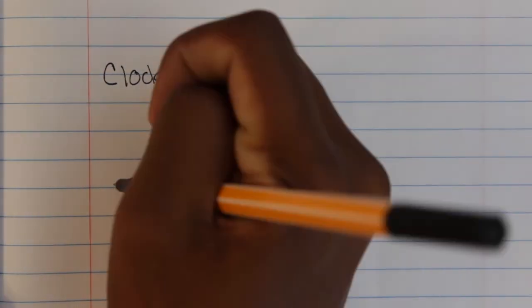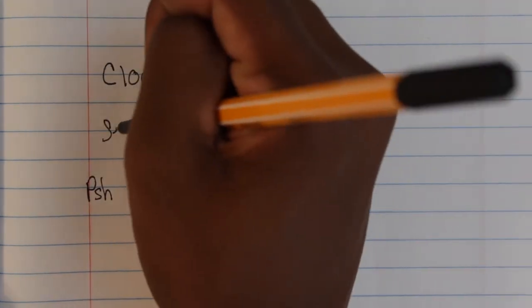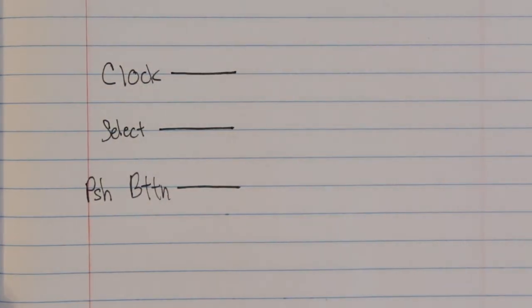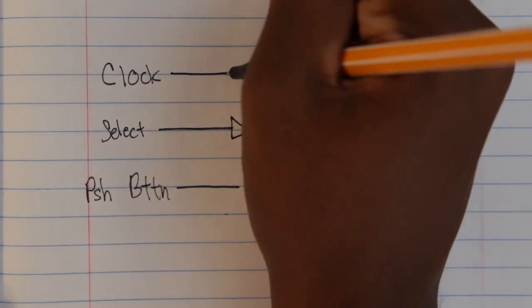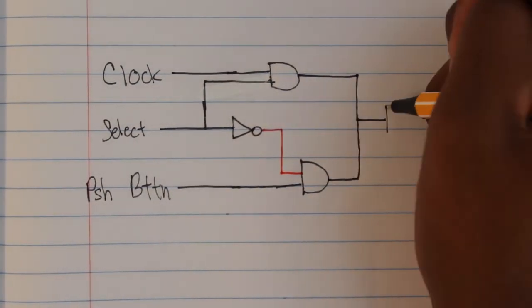So we want it to be able to halt the system. Before we do that though, we need to make a circuit that takes in two clock signals - one from the automatic clock and one from the manual push button - and outputs one clock signal. Then of course we should be able to choose which clock signal we want to use.